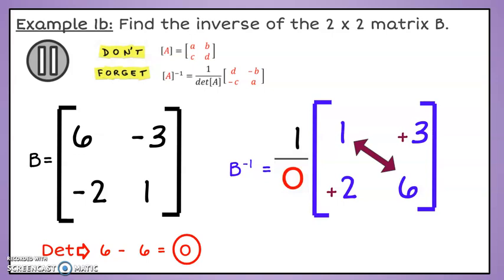According to our formula, we will divide the elements by our determinant, or multiply by its reciprocal. Do we have a problem? Yes. If the determinant of a matrix is 0, then it does not have an inverse. Such a matrix is called a singular matrix.